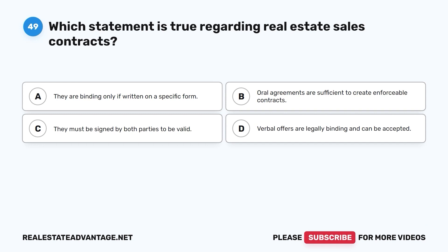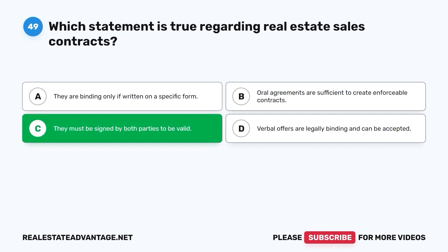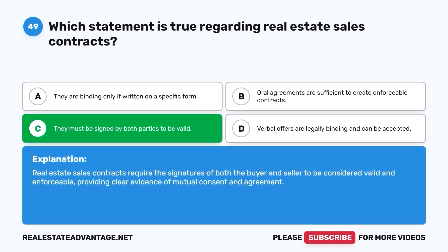Question 49. Which statement is true regarding real estate sales contracts? A. They are binding only if written on a specific form. B. Oral agreements are sufficient to create enforceable contracts. C. They must be signed by both parties to be valid. D. Verbal offers are legally binding and can be accepted. The correct answer is C. Real estate sales contracts require the signatures of both the buyer and seller to be considered valid and enforceable, providing clear evidence of mutual consent and agreement.